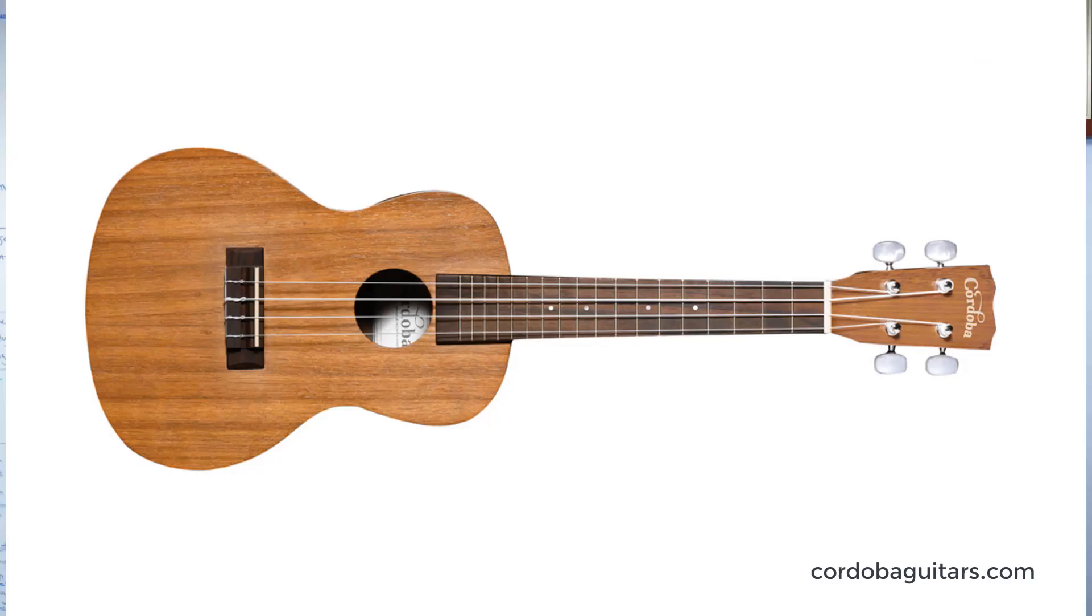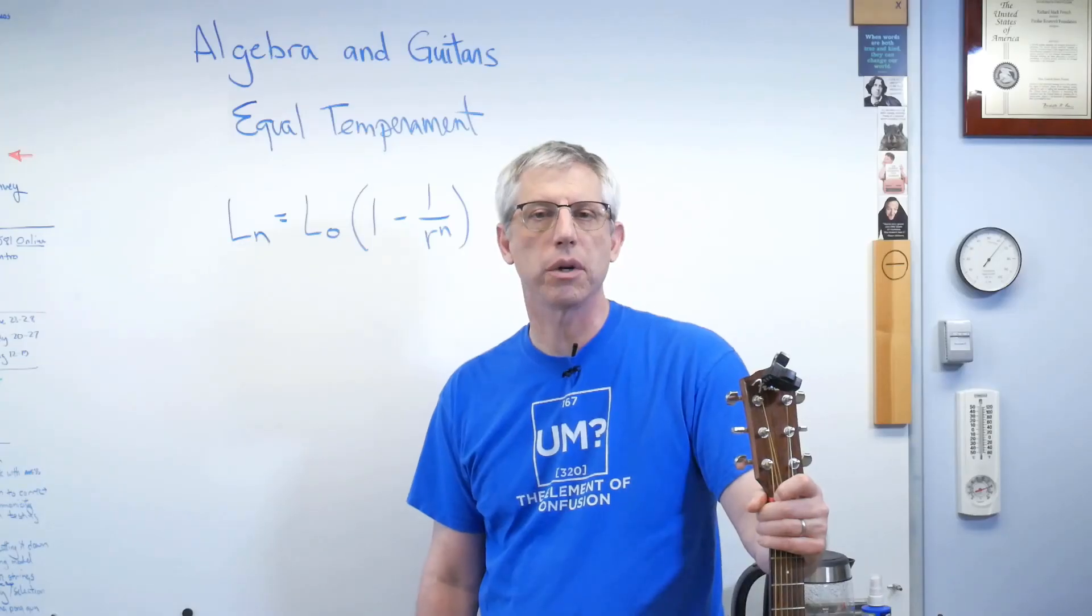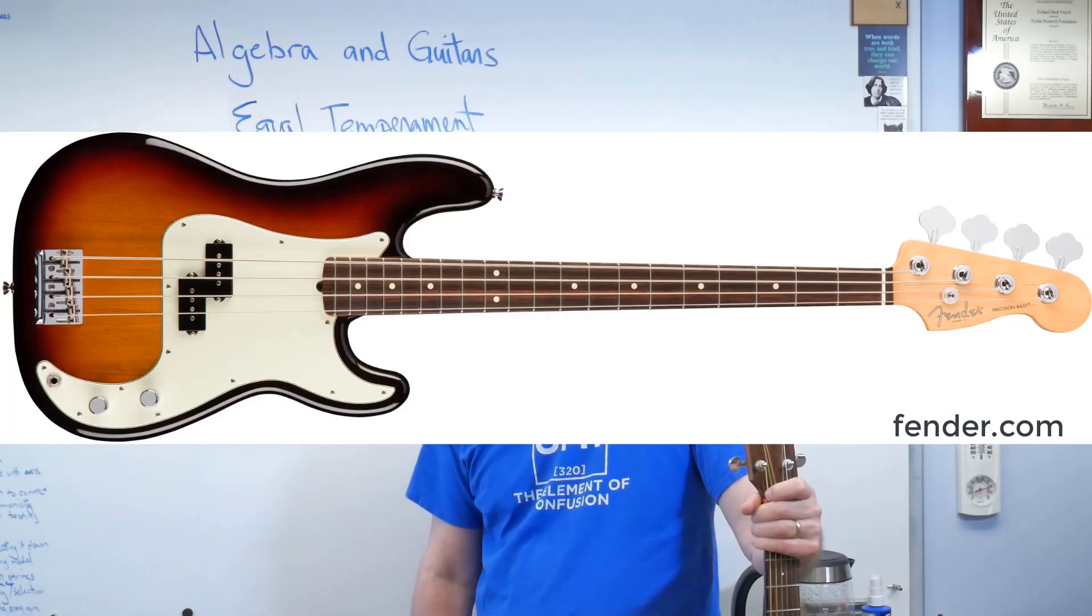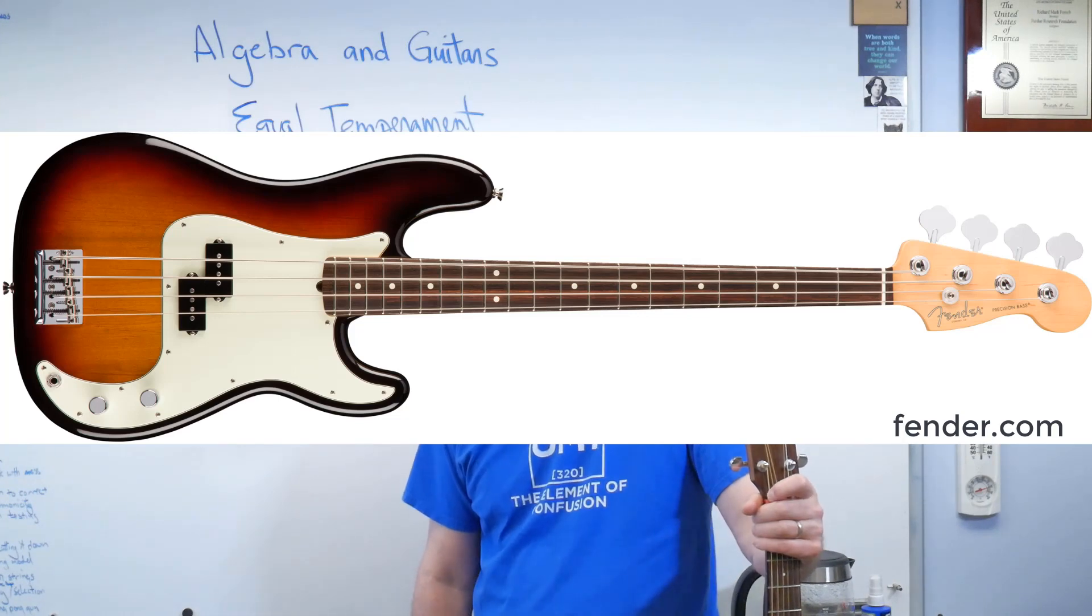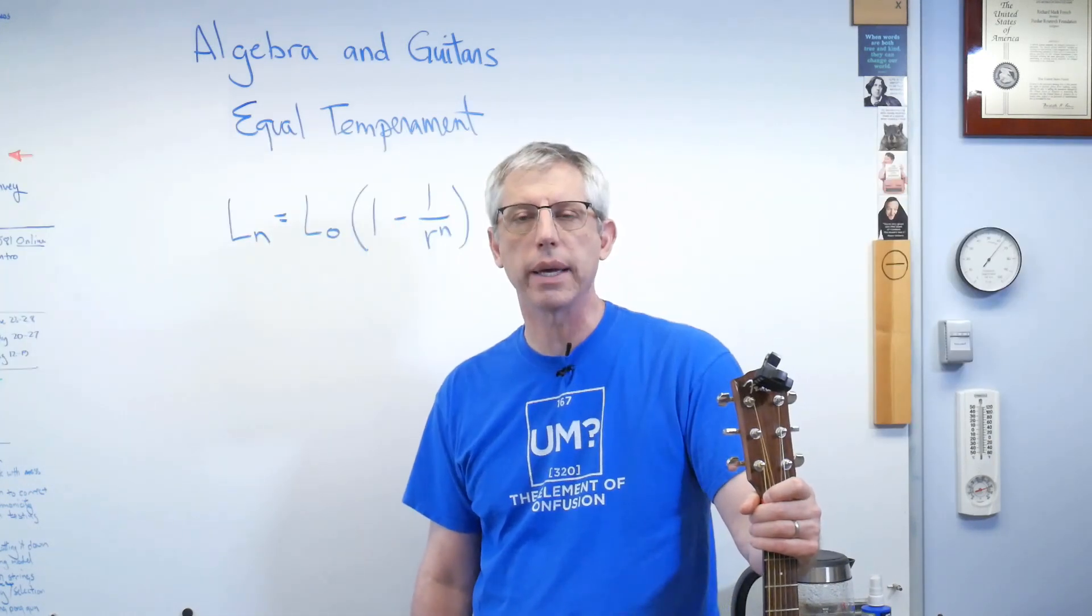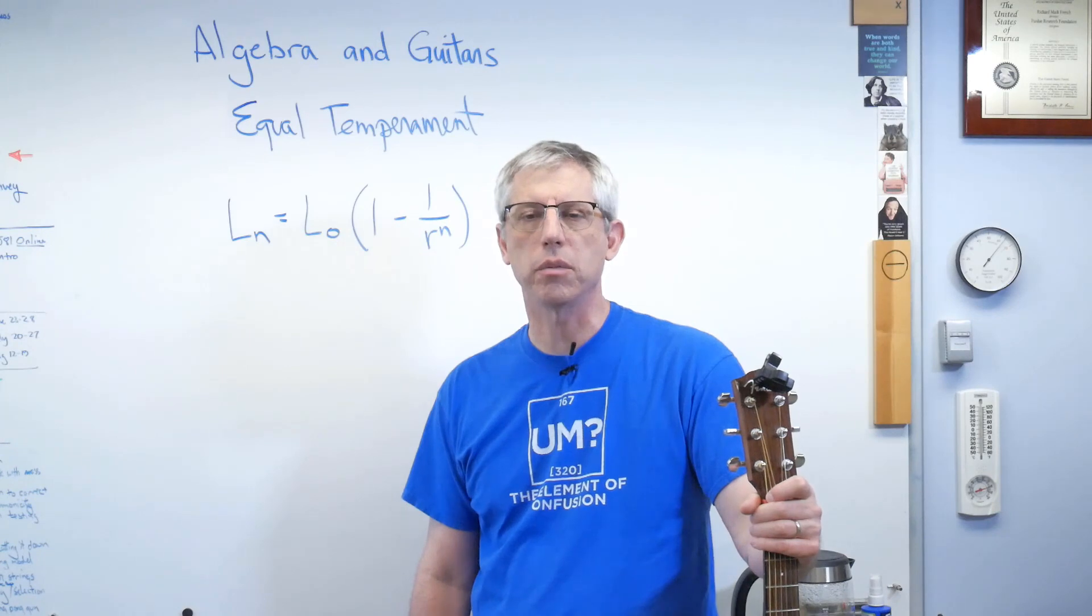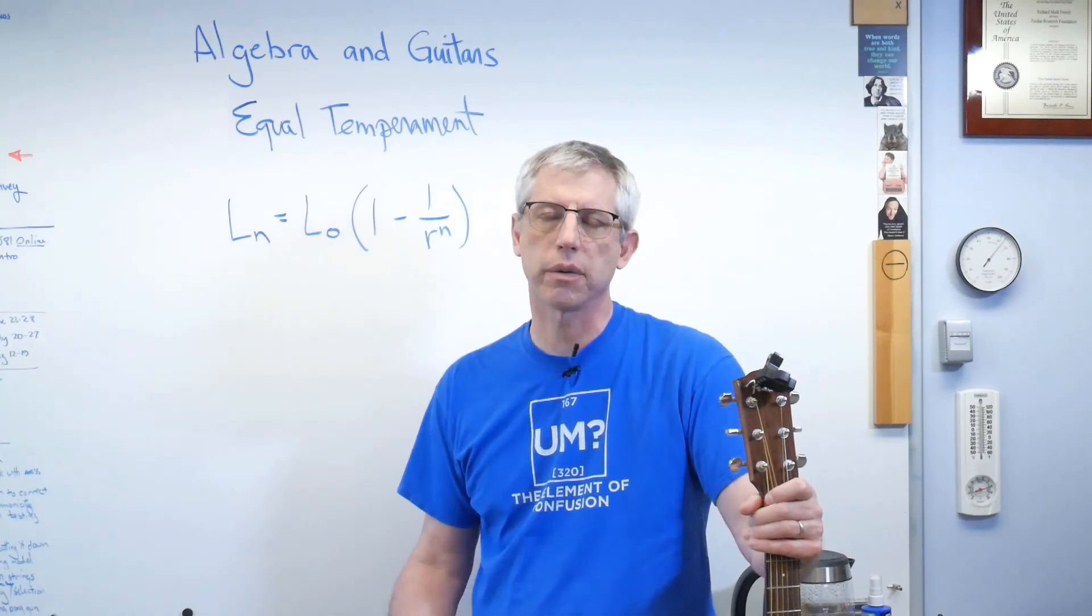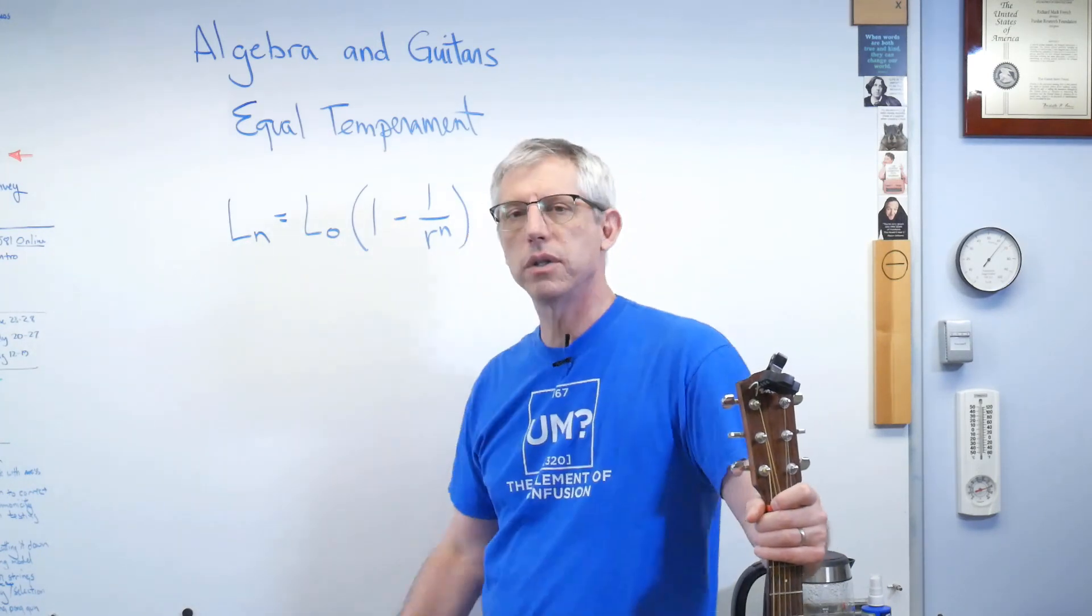Ukuleles, also very short. On the other end of the scale are electric basses, fretted basses. Those have a scale length of 34 inches for a long scale bass. That's pretty much the spectrum. But if I decided to make one longer for whatever reason, this equation still works.